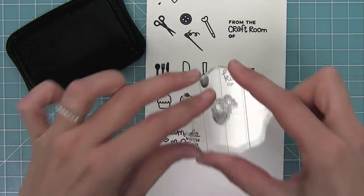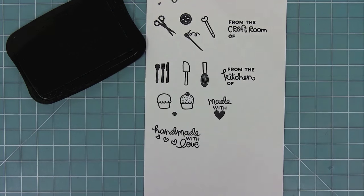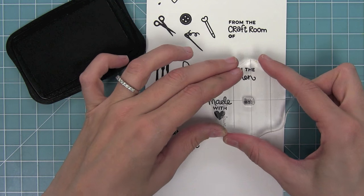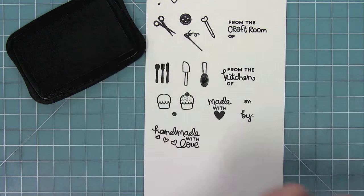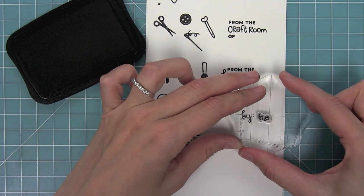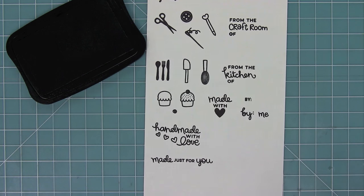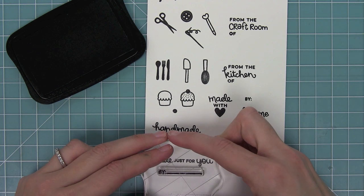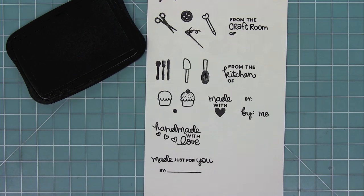We have handmade with love and then made with a heart. We've got two versions of by and then we also have the word me which I think is really cute, or you could write your own name of course.